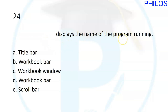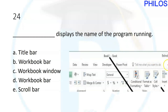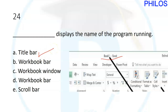Question twenty-four: blank displays the name of your program running. It is the title bar that displays the name of the program you are running — for example 'Book1'. The answer is A: title bar.